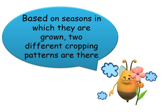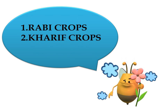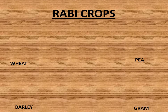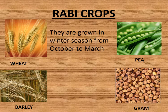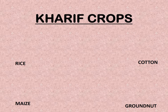Now, we have two different cropping patterns on the basis of seasons in which they are grown. Rabi crops are grown in winter season from October to March. These crops are also known as winter crops. Some examples of Rabi crops are wheat, barley, and tea.